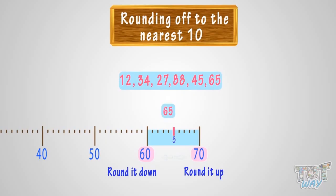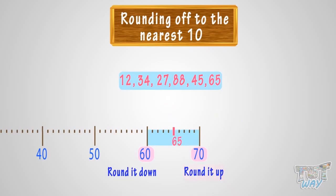What do we do now? 65 is 5 numbers away from 60 and 5 numbers away from 70. Here we have a simple rule: whenever a number is on the 5 mark, we always round it up.